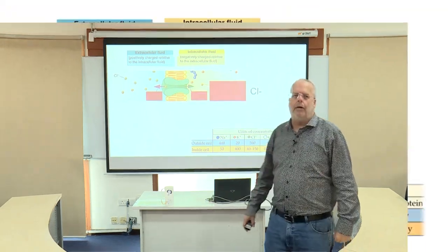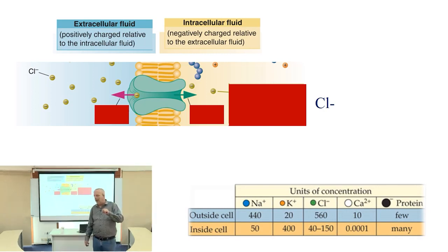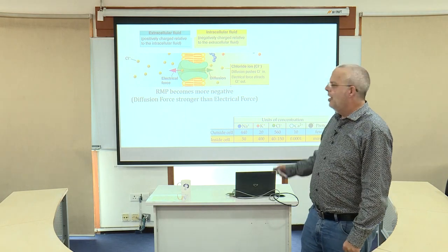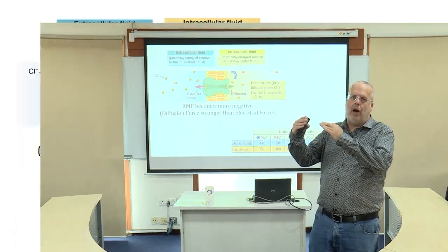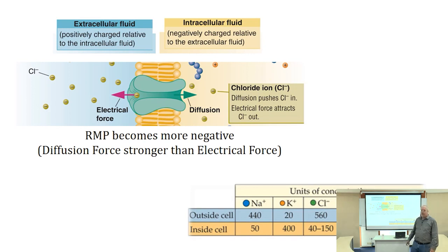Our last ion is chloride — negatively charged. We know there is more chloride outside than inside, so the diffusion force is going to push chloride into the cell. But it's a negative ion, which is repelled by the negative interior — it's attracted to the positive outside — so the electrical force is going to push it out of the neuron.